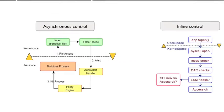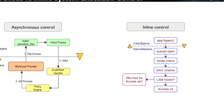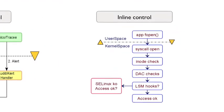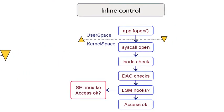In contrast, an inline policy control engine, such as KubeArmor, is able to integrate its policy controls directly into the kernel's processing pipeline, thereby preventing the access or destruction of sensitive files. To do this, KubeArmor is not an eBPF-based solution, but rather is based on Linux Security Modules, or LSMs.